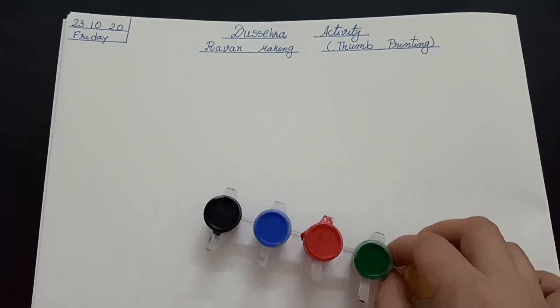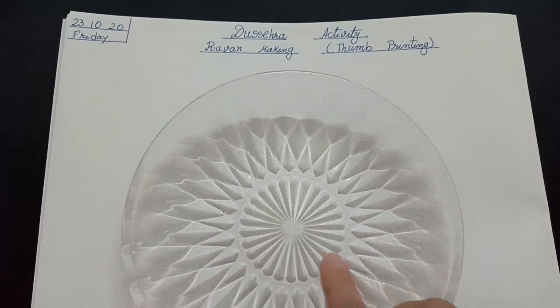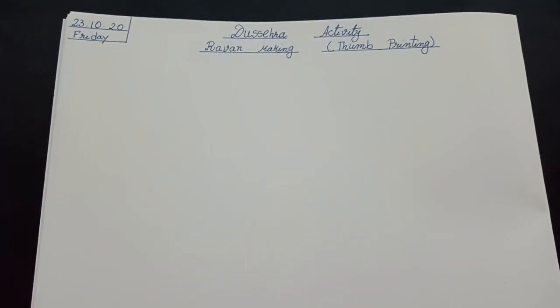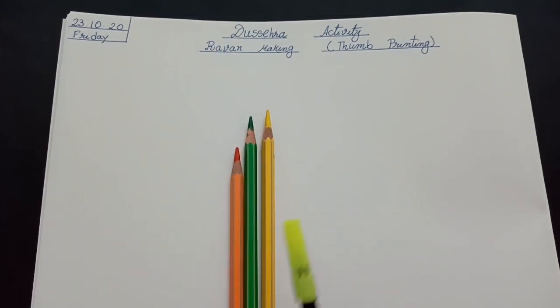A drawing copy, red water color, a plate for mixing the color, orange, green and yellow color pencils, and a black sketch pen. In case you don't have color pencils, you can use crayons instead. So children, let's get started.